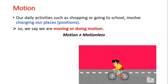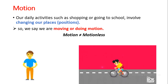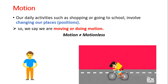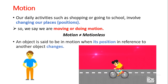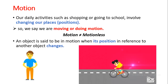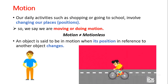When I do not change my position, I say that I am motionless. Like this person — he is in the same place and in the same position. So is he in motion or motionless? He is motionless. By the way, the person who is riding the bike is in motion because his place or his position is changing. So an object is said to be in motion when its position in reference to another object changes.